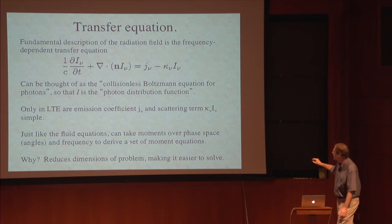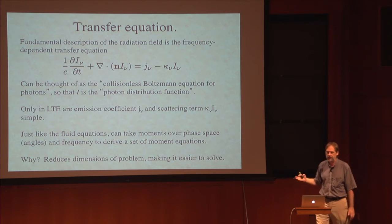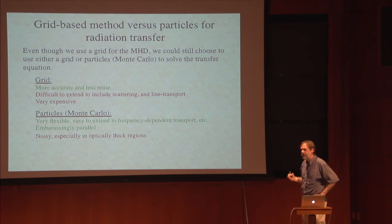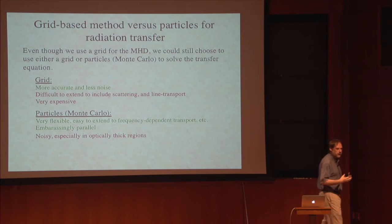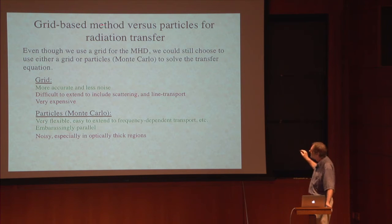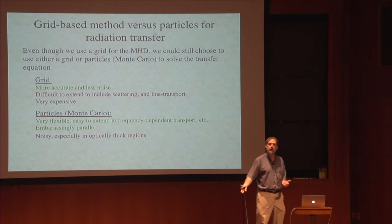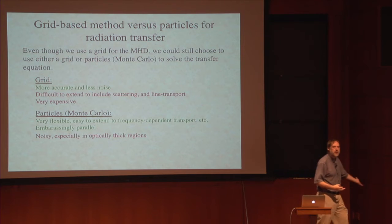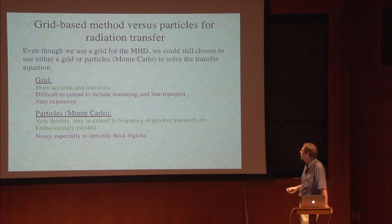Why would you want to take moment equations? Because it greatly reduces the dimensionality of the problem. Even after deciding to solve the transfer equation, there are still more choices. You could use either grid-based methods or particles — exactly analogous to the plasma problem where you could use PIC particles or grid-based methods for solving the Boltzmann equation. The advantages of the grid are that it can be more accurate with less noise. The problem is that it's difficult to extend for line transport, frequency-dependent transport can be very complicated, and it can be very expensive because you're discretizing a seven-dimensional phase space.